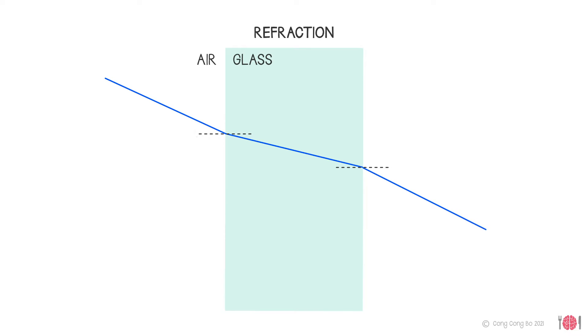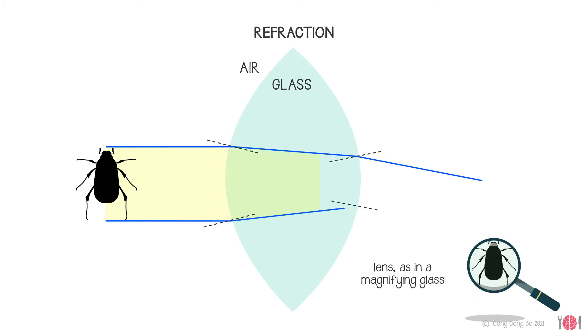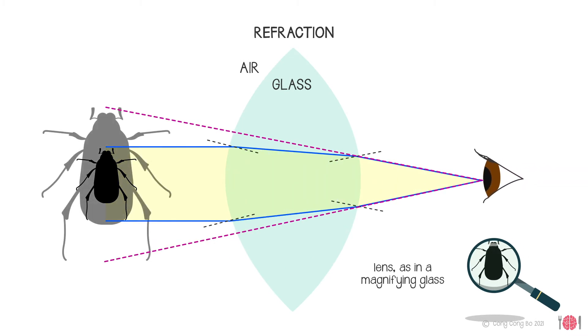If the two surfaces of the glass are not parallel you get a lens which can magnify the object in front of it so we can see an image that is larger than the object.